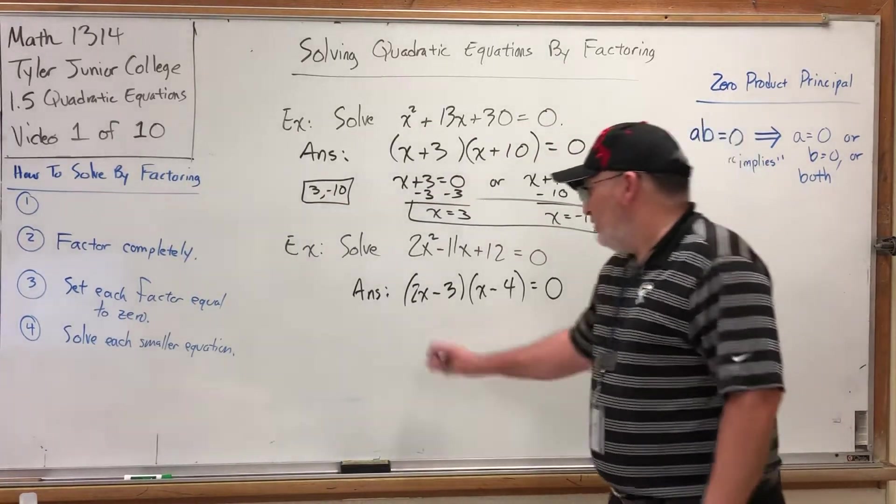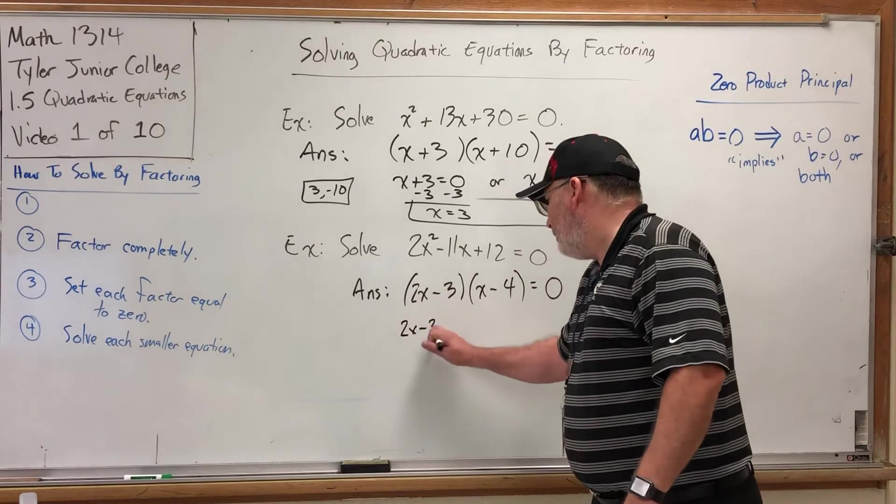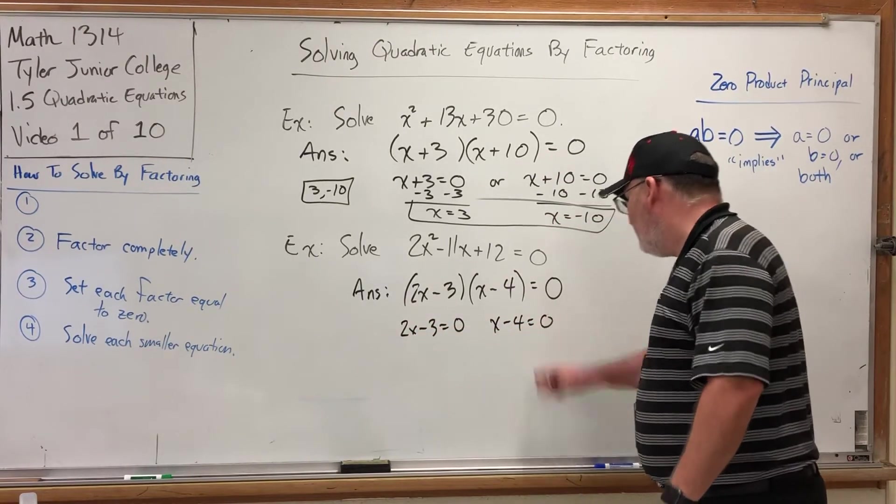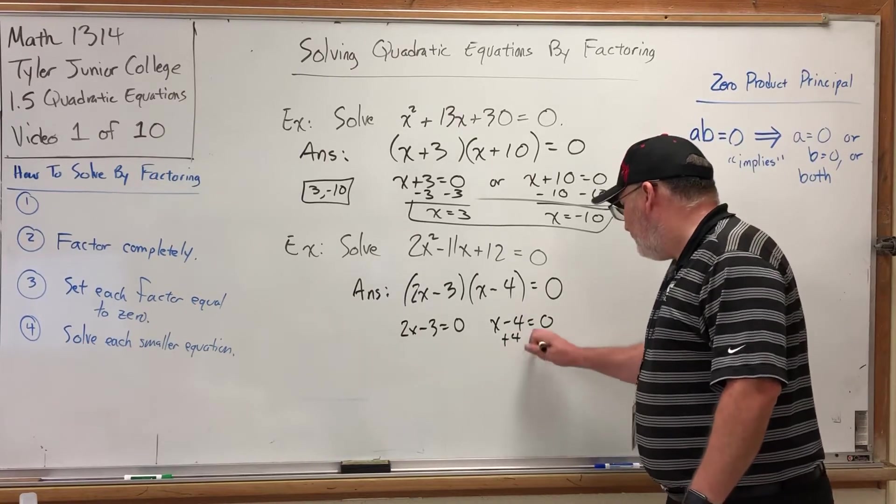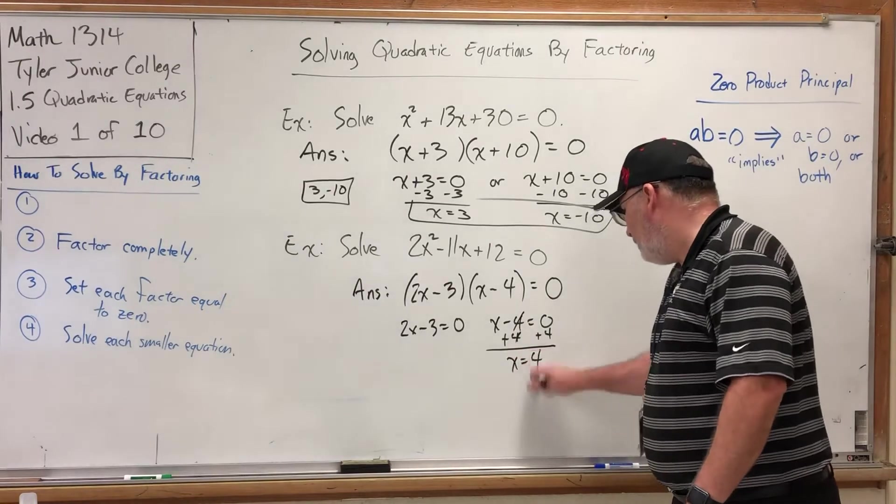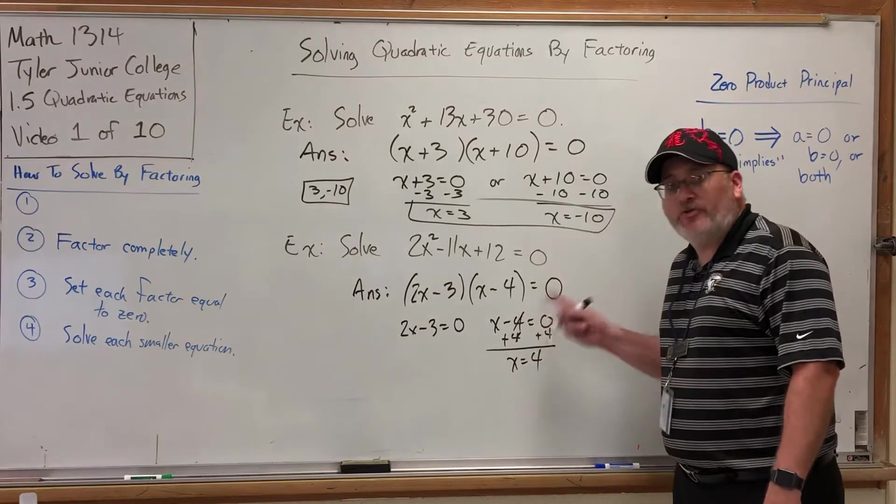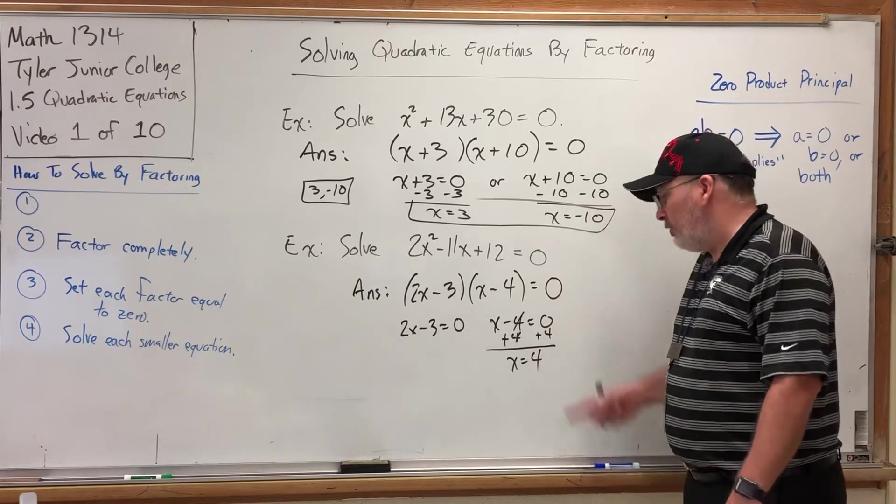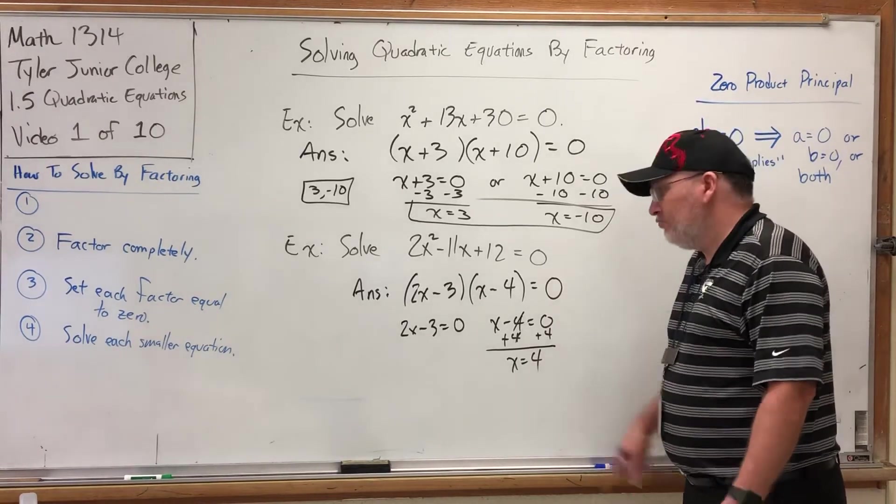Just set each factor equal to 0. 2x minus 3 equals 0. x minus 4 equals 0. And then continue to solve. For the second one, add 4 to both sides. And you get x equals 4. By the way, this type of move is a prerequisite skill I expect you to already have. And frankly, I expect you to be able to solve this in your head. And this one.